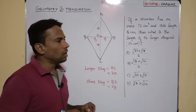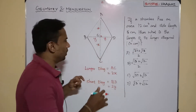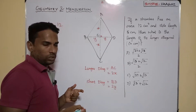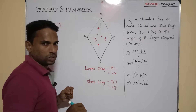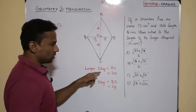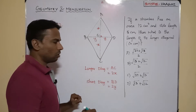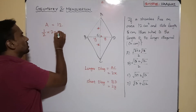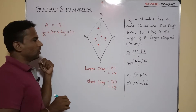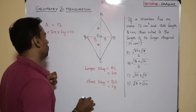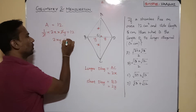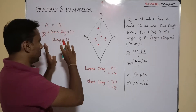Coming back to the question: the rhombus has an area of 12 centimeter square. The area of a rhombus is half the product of the two diagonals. The diagonals are now expressed in terms of x and y, so: (1/2) × 2x × 2y = 12. Simplifying by canceling one factor of 2, we get 2xy = 12. Let us fix this as equation 2.